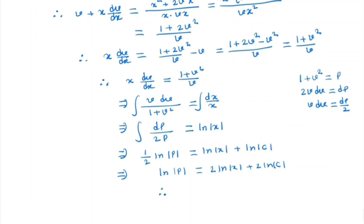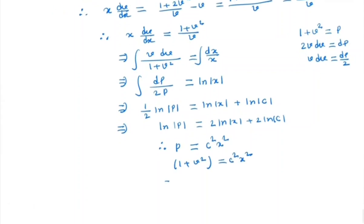So by the simple calculation of logarithm, we get p is equal to c square x square. Now what is p? p is 1 plus v square is equal to c square x square. And if we put the value of v, we have 1 plus y by x, y square by x square is equal to c square x square, which is the general solution.